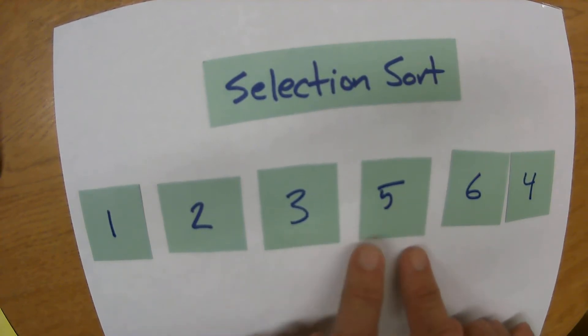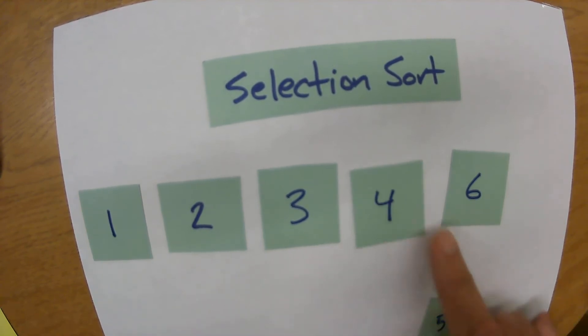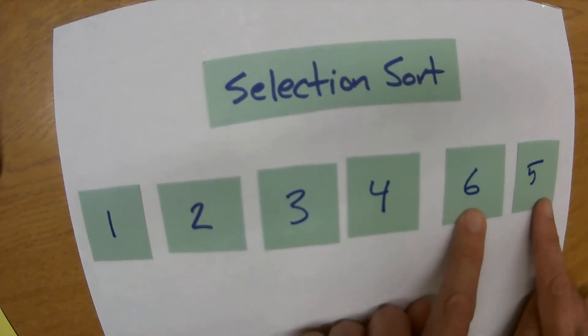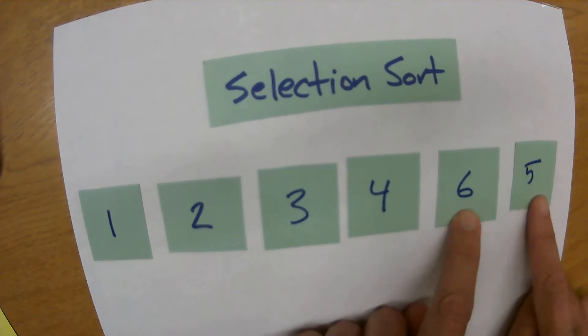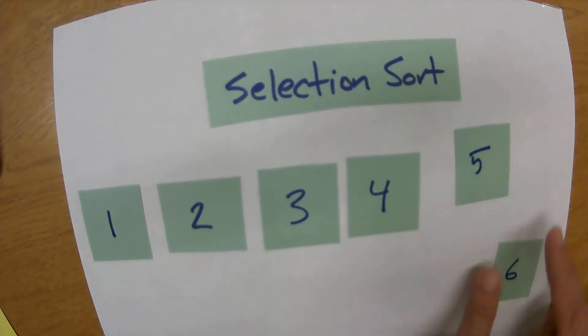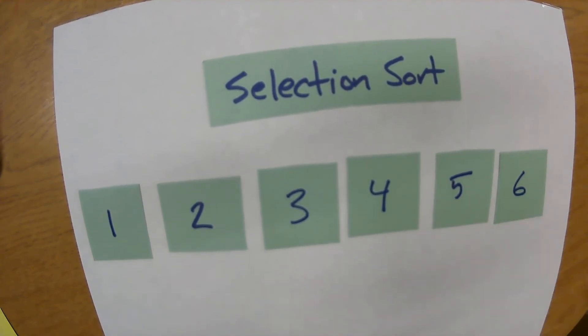We scan from here on over and the minimum value is a four, so we swap those. Then we're down to the last two elements and the minimum value happens to be in this position, so we swap them and then we're done. So that is a selection sort, another one that's reasonably easy to implement in code.